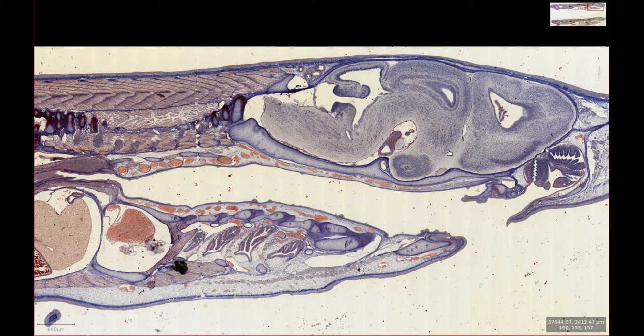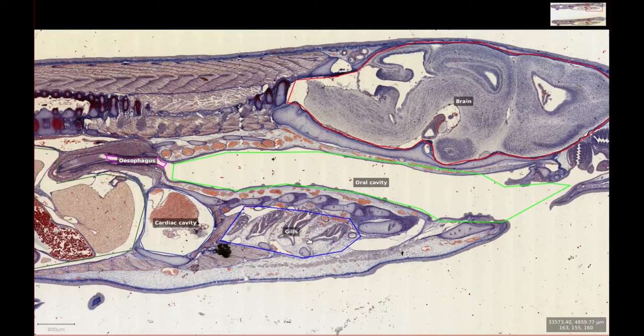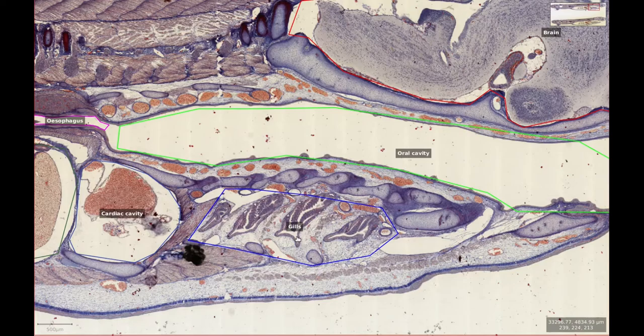We can tell that it's from the midline because the brain is cut neatly in half so we can see the ventricles, or open cavities within the brain. We can also see the start of the esophagus just at the back of the oral cavity. There's a small portion of gills just ventral to the oral cavity, but other sections that are more lateral will have larger portions.